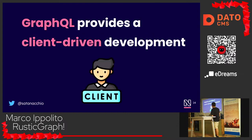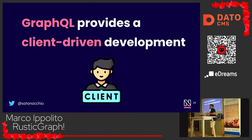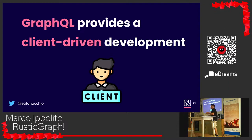The cool thing about GraphQL is that it provides a client-driven development model — it's the client who decides which kind of data it requires. This is beneficial because if you have a web application or a mobile application sharing the same backend, each can request only what it needs.